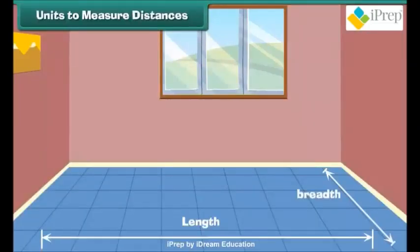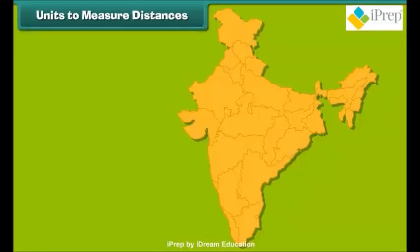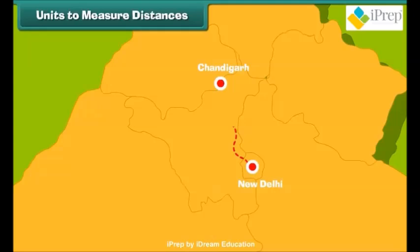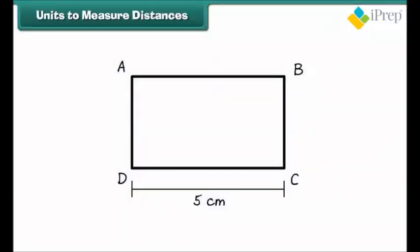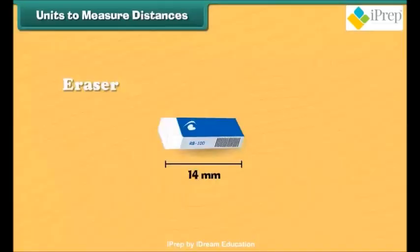Length, breadth, height are the words used to express some distance. The distance between New Delhi and Chandigarh is 250 kilometers. Many students participated in 400 meters race. The length of rectangle ABCD is 5 centimeters. The length of the eraser is 14 millimeters.